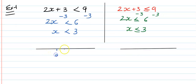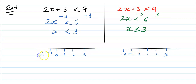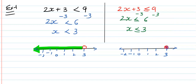Let's draw the number lines: 0, 1, 2, 3, and also minus 1, minus 2. For x less than 3: 3 is not included, so we make a white circle, and all values less than 3 go this way. For x less than or equal to 3: this point is included because of the equal sign, and all values go in this direction.